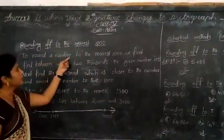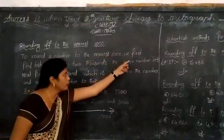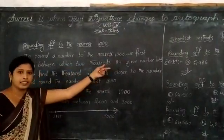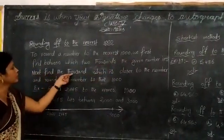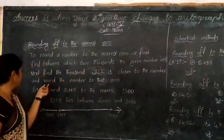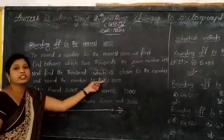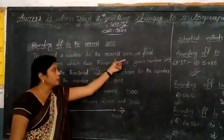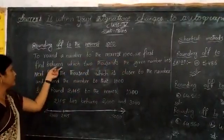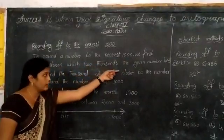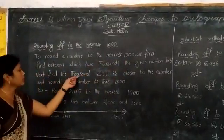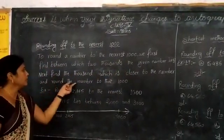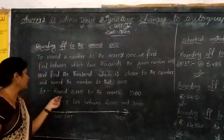To round a number to the nearest 1000, we first find between which two thousands the given number lies. Next, find the 1000 which is closer to the number and round the number to that 1000.